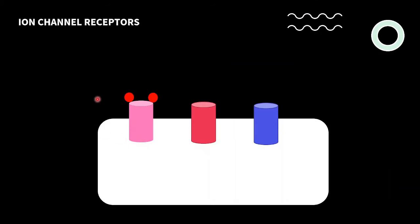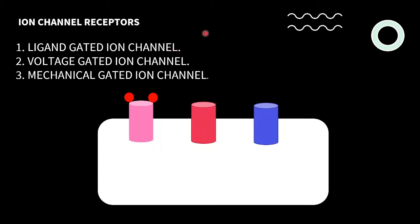Starting with the ion channel receptors. Usually in a cell, there can be three types of receptors. In the first type, ion channels can be operated by the binding of a ligand. In the second type, they can open or close by voltage — these are known as voltage-gated ion channels. And the third type are mechanical pressure-regulated, known as mechanical-gated ion channels.